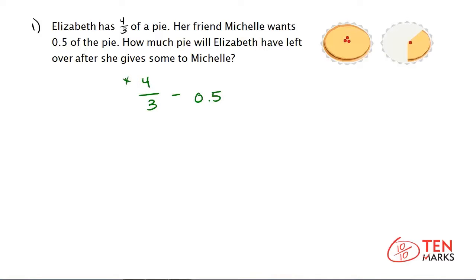We can't do this subtraction unless both numbers are written as fractions or both written as decimals, so I'm going to convert this fraction into a decimal. Recall that a rational number has the form p over q, where q is not 0. Since 4 thirds is a rational number, I can divide the numerator by the denominator. The fraction symbol is just another way of expressing the division of the numerator by the denominator, so we'll use long division.